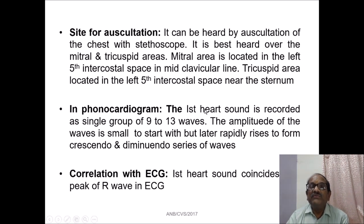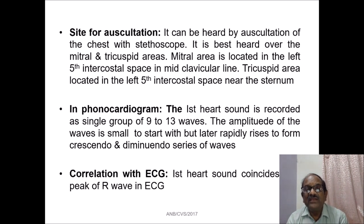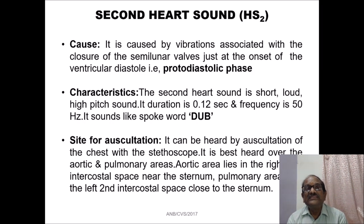In the phonocardiogram, the first heart sound is recorded as a single group of 9 to 13 waves. The amplitude of the waves is small to start with but later rapidly rises to form a crescendo and decrescendo series of waves. Its correlation with ECG: the first heart sound coincides with the peak of the R wave in the ECG. Now let us look at the second heart sound, represented as HS2.